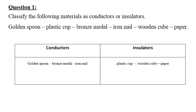Is a golden spoon an insulator? How can you tell? We have a rule to know if something is a conductor or an insulator. A conductor allows electricity to pass through it easily, while an insulator blocks it — electricity cannot move through it.